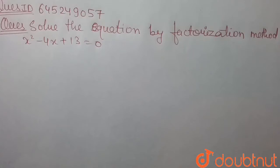Everyone, our today's question is solve the equation by the factorization method x squared minus 4x plus 13 is equals to 0.